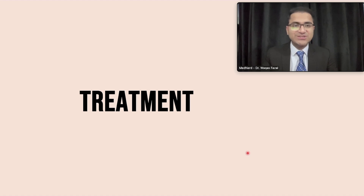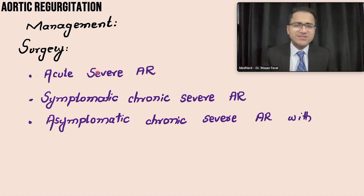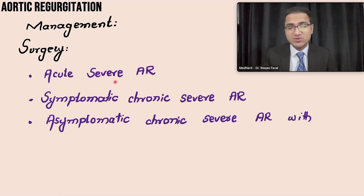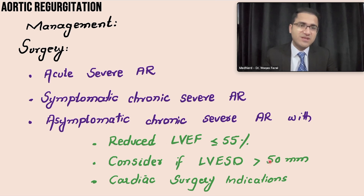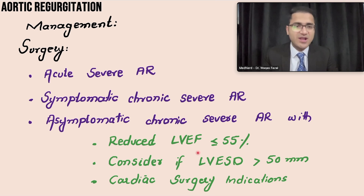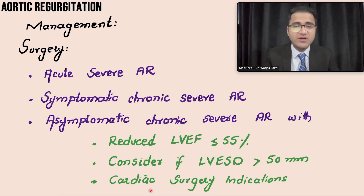For treatment, surgical treatment is the mainstay. Surgery is indicated in acute severe aortic regurgitation, symptomatic chronic severe aortic regurgitation, and even in asymptomatic patients with chronic severe AR if there is reduced left ventricular ejection fraction or LV end-systolic diameter greater than 50 mm — indicating dilated cardiomyopathy. Surgery is also considered if the patient is already undergoing cardiac surgery for another indication.